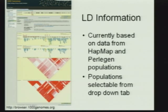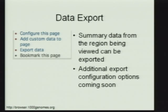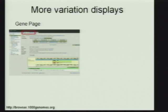You can view linkage disequilibrium information in context with the SNPs. Currently we calculate the linkage disequilibrium from the HapMap and the Prologen populations, and the populations to view this are selectable. I also talked a little bit earlier about data export — this provides summary data from the region being viewed, and we're going to work on some additional export configuration options to make this a little bit easier to use, to pull out just a small chunk of the genome or a small chunk of the SNPs.